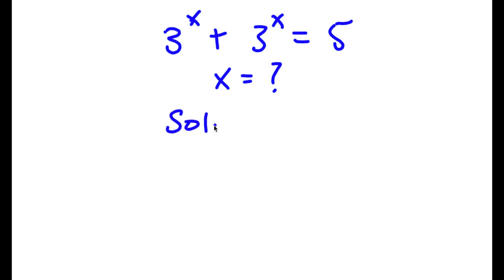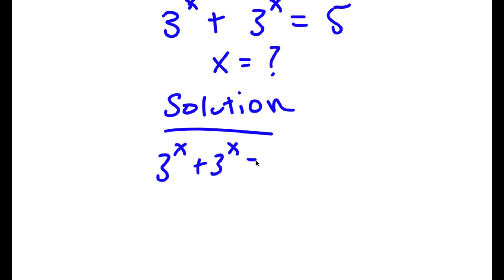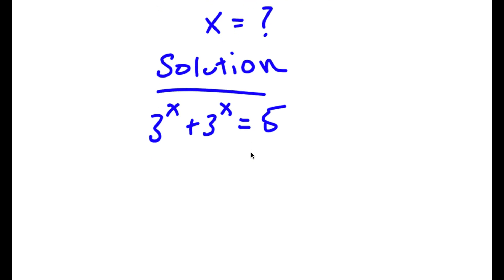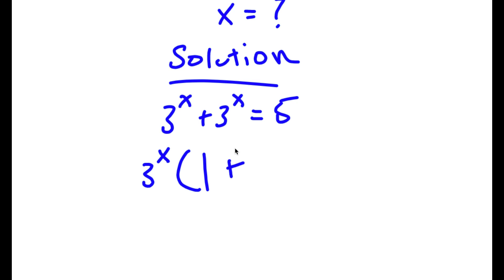So now for our solution, we have 3 to the power of x plus 3 to the power of x is equal to 5. The first thing I'm going to do is factor out 3 to the power of x from the left hand side. So I have 3 to the power of x times 3 to the power of x divided by 3 to the power of x, which equals 1, plus 3 to the power of x divided by 3 to the power of x, which is also 1.